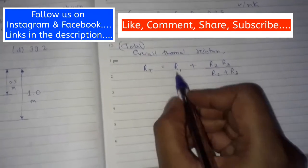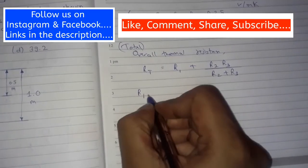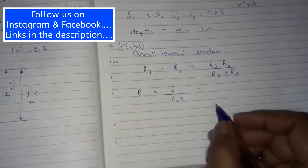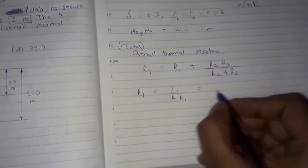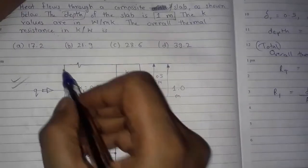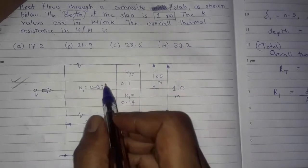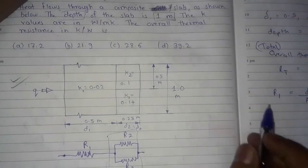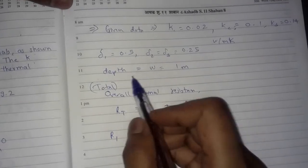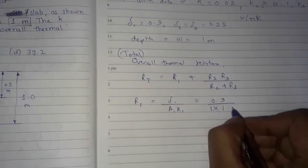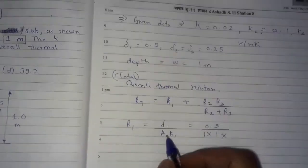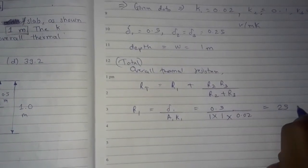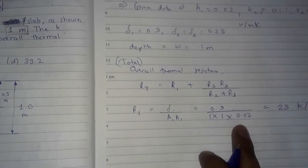First we find R1, which equals δ1 divided by (A1 × k1). δ1 is 0.5 m. For this region, the area A1 is 1 meter by 1 meter depth, so A1 = 1 × 1 = 1 m². With k1 = 0.02, we get R1 = 0.5 / (1 × 0.02) = 25 kelvin per watt.